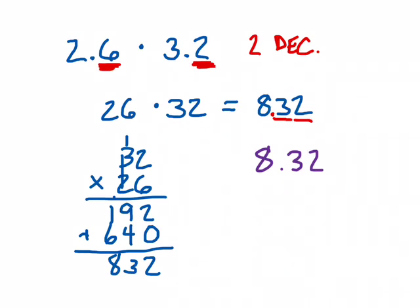The big thing to note is that number of decimal places in the problem, in this case 2, corresponds to the number of decimal places in the answer. And that's the only difference.